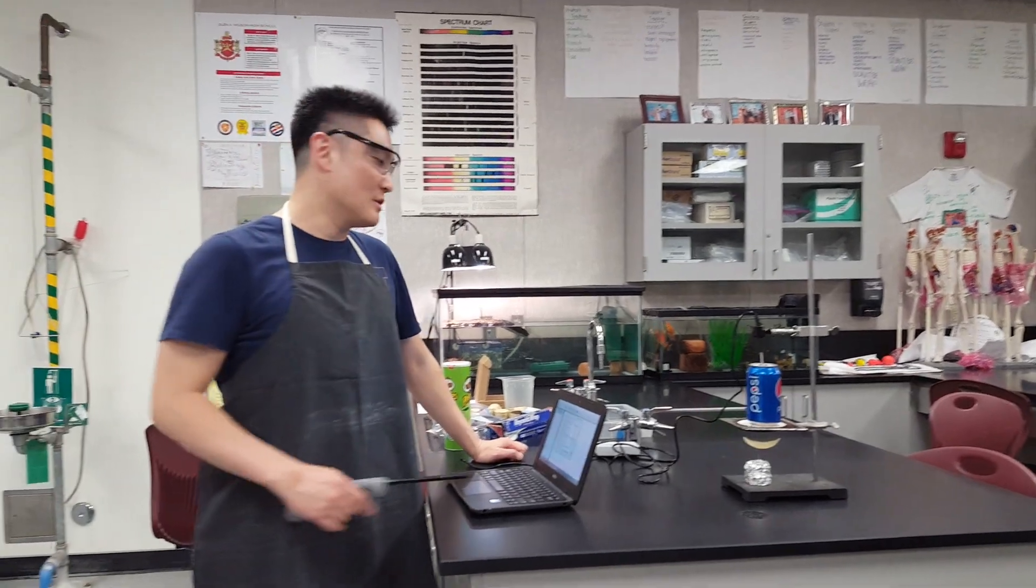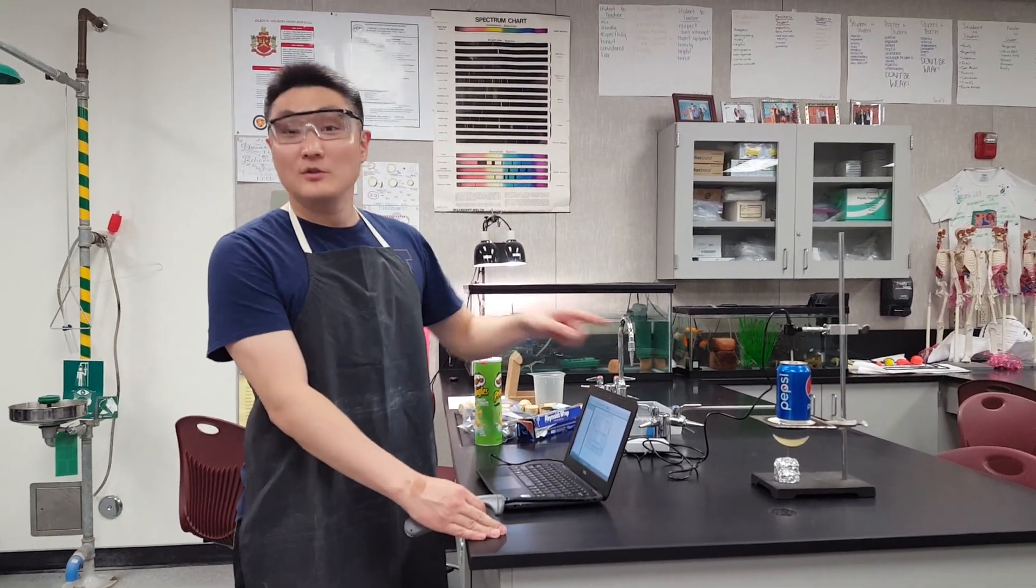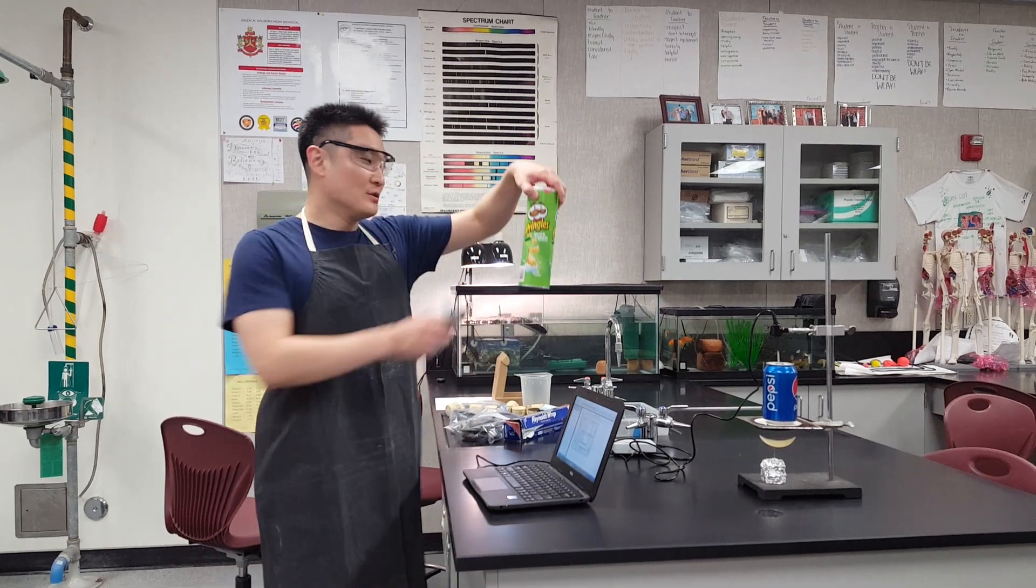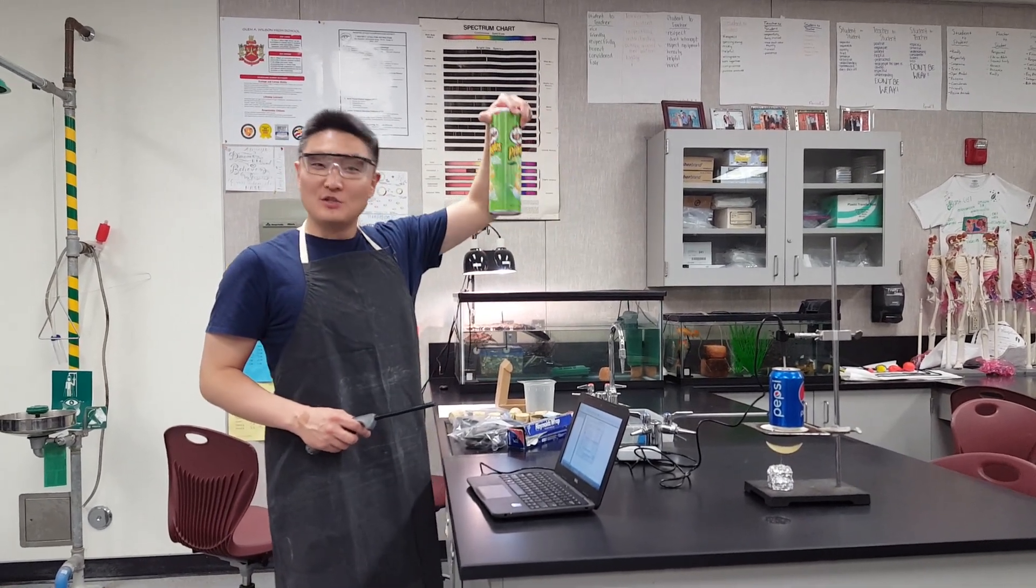Alright, we're doing the calorimetry lab. We're going to determine the energy in a Pringles sour cream and onion chip, one of my favorites.